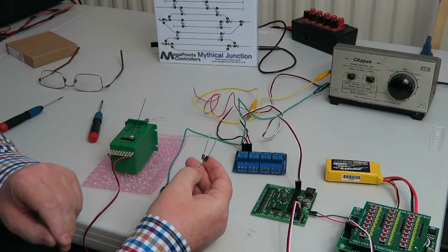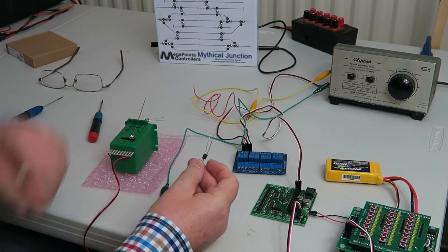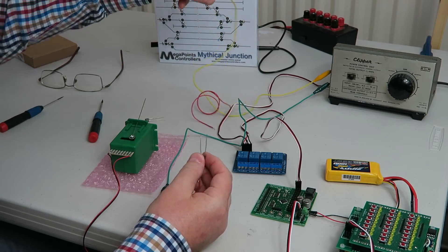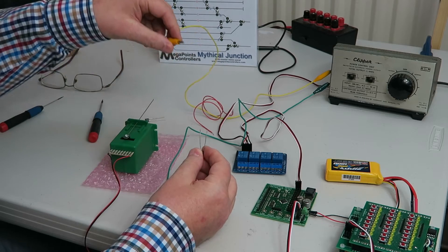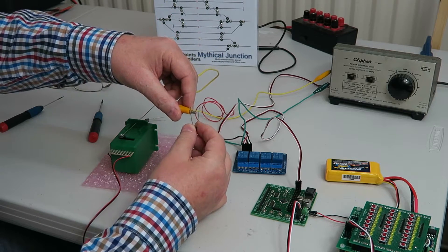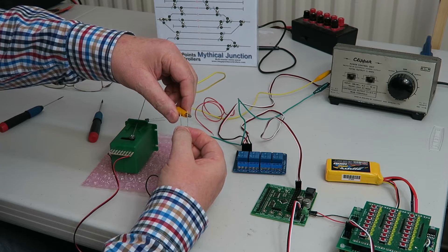Because it's an AC power source each diode will allow only half of the waveform to go through. So if I touch one to the input current you can see the switch machine moving. And if I touch the opposite diode it moves in the opposite way.